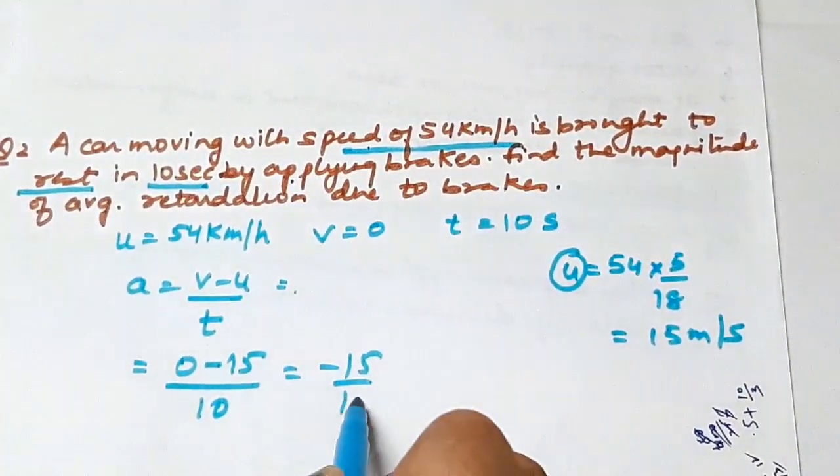We put v as 0 minus 15 divided by 10. This is minus 15 upon 10, which is minus 1.5 meter per second square. Acceleration is negative, clearly indicating this is a retardation case. Negative sign shows retardation. If the magnitude of average retardation is asked, that is 1.5. I hope this is clear.